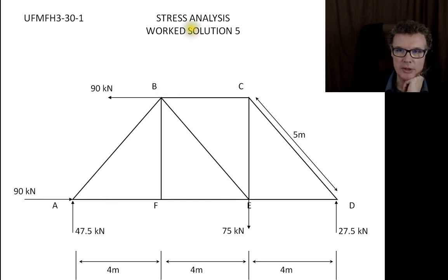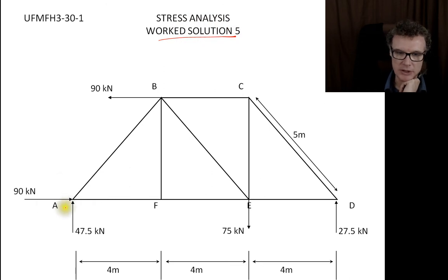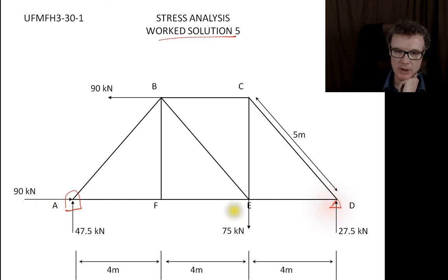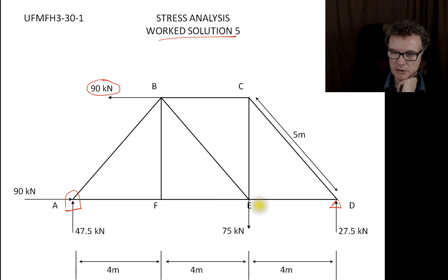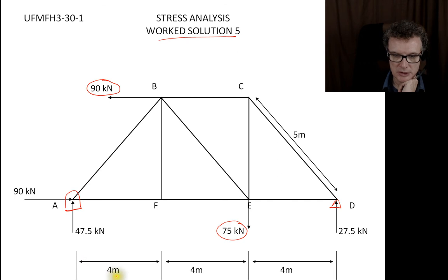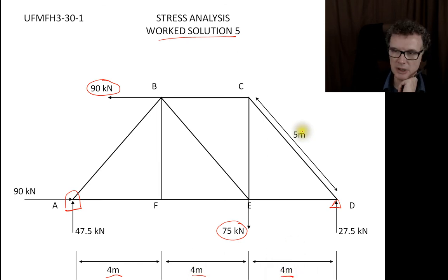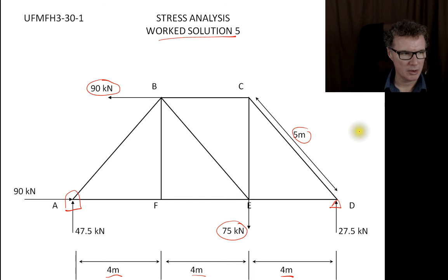Looking at work solution 5, a pre-solved problem. We've got a hinge here and a pivot on rollers, and we found the reactions. There's a force being applied going left and another downward load. In terms of dimensions, four meters each section, and I can see a five, so we know we're dealing with a three-four-five triangle — the height's not given but we can infer it.